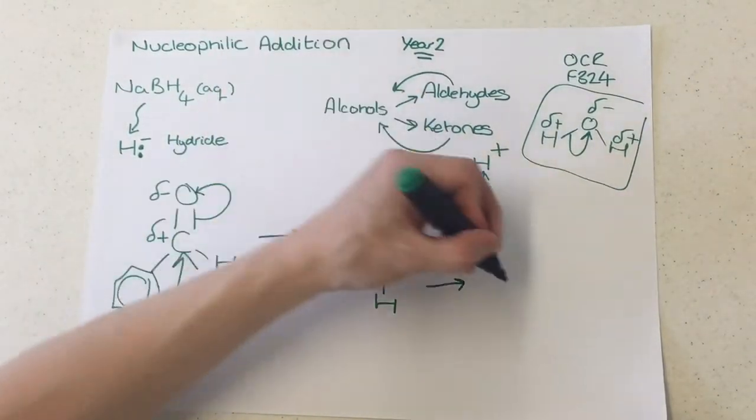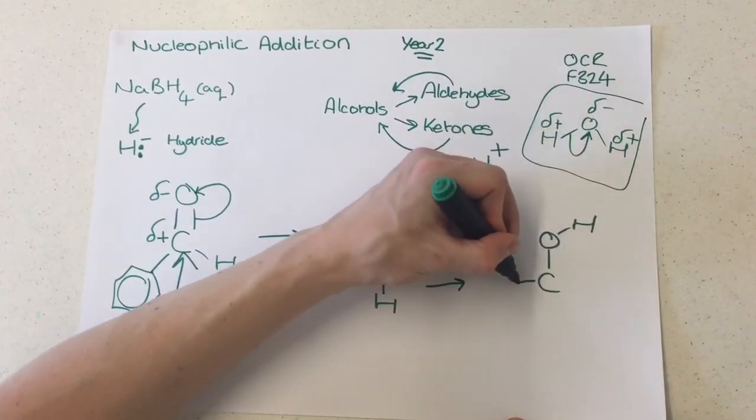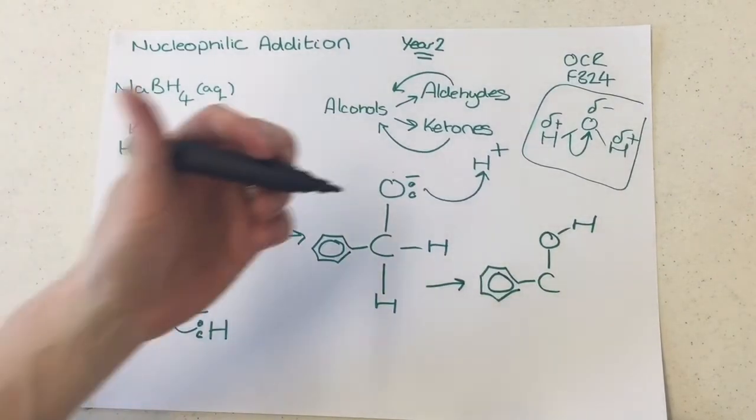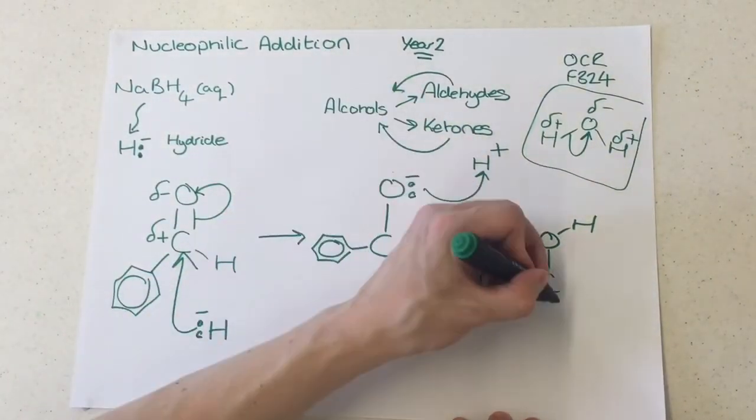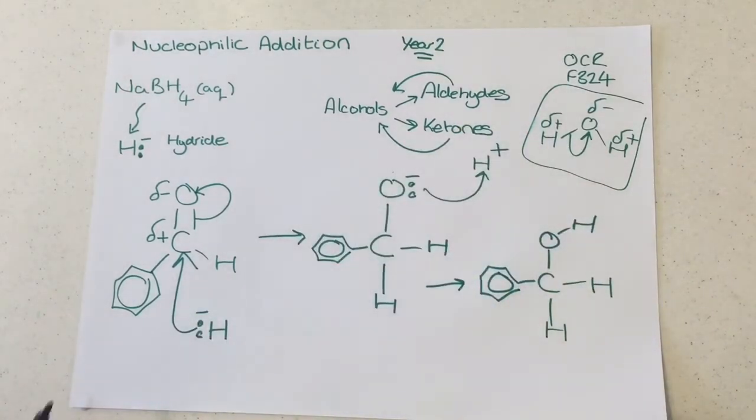What we then form here from this molecule is we form an alcohol. Notice that nothing has happened with the benzene ring just here. Absolutely nothing happened with that. Sorry for it being a bit skewed there, but you get the gist. And the point is, nothing has actually happened with that benzene ring. Nothing has reacted on it.